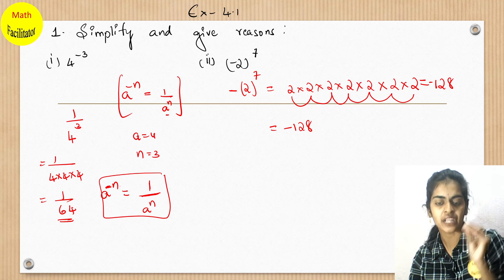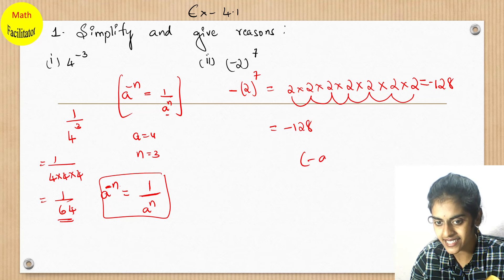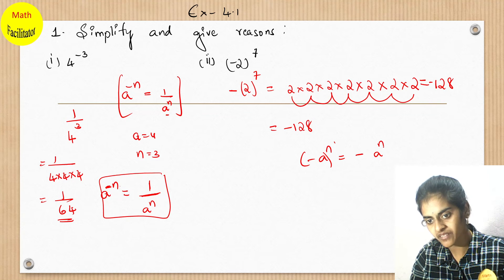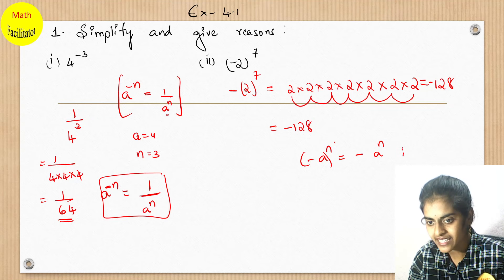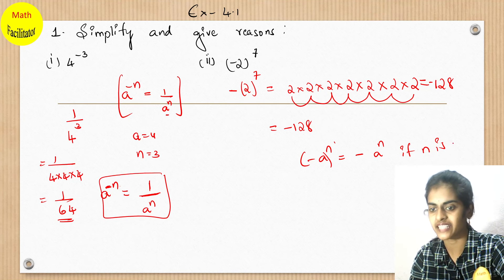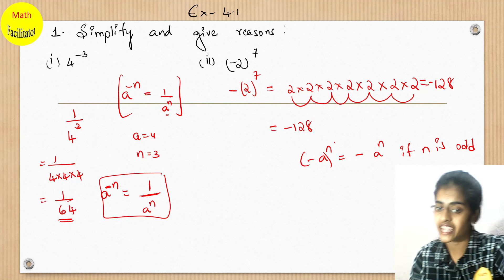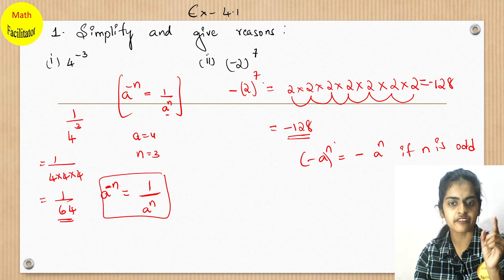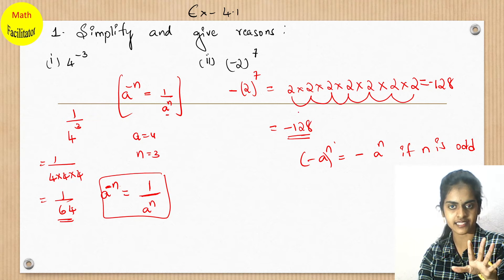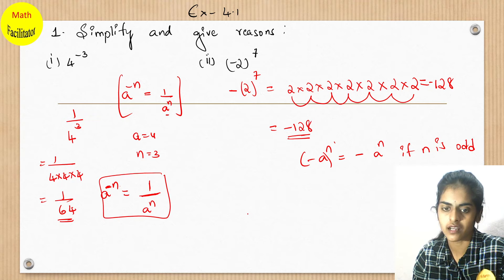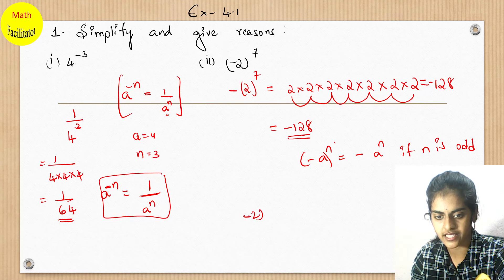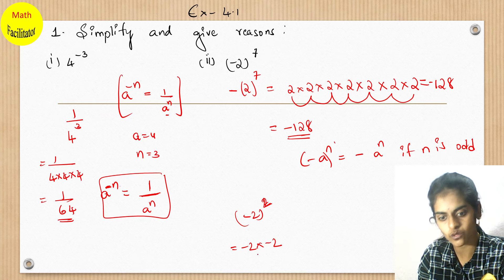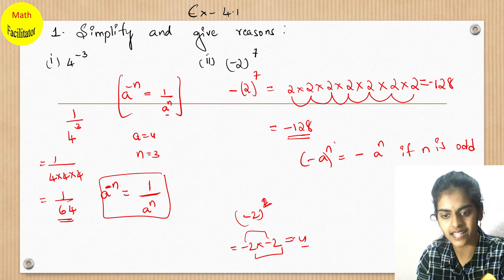Why are we getting a minus here? Because we have the formula: minus a whole power n is nothing but minus a to the power n if n is odd. If n is even, you will get a positive sign in the answer. For example, if you have minus 2 whole square, the power is 2 which is even, so it is minus 2 into minus 2, and minus into minus becomes plus. So the answer is plus 4.